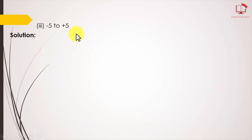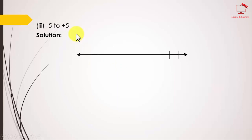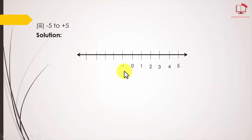Part 3: from positive 5 to minus 5. Same approach — draw a straight line, mark points with equal distances using a scale. Here you can see I marked all the points and assigned integers: 0, 1, 2, 3, 4, 5 on the right and minus 1, minus 2, minus 3, minus 4, minus 5 on the left.